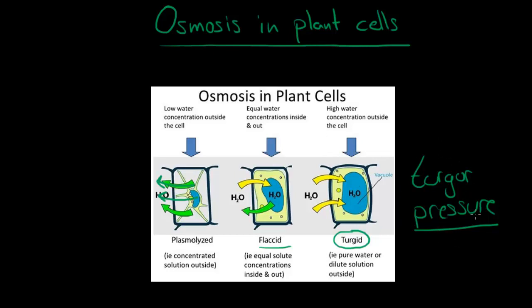Turgor pressure is very important because it will be responsible for moving the water and the different nutrients to all parts of the plant.